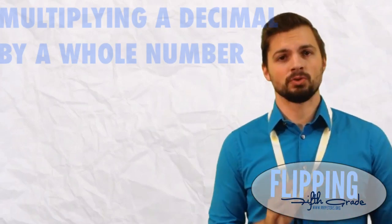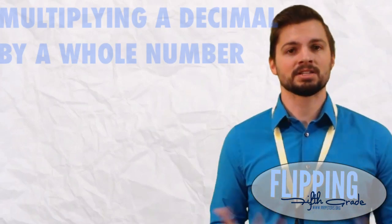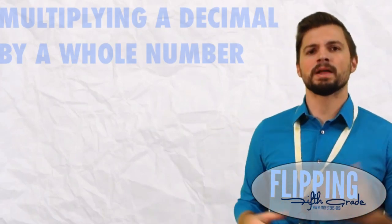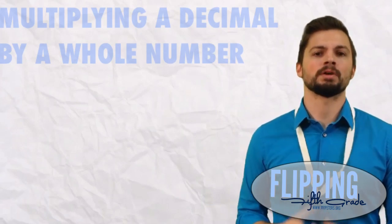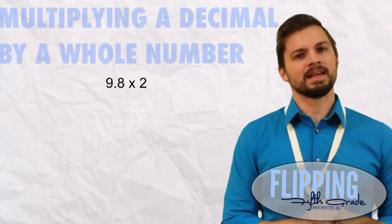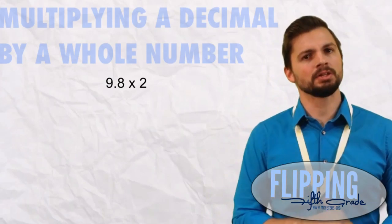Alright, now we are on to actual multiplication of decimals and we're going to start off where we multiply a decimal by a whole number. So I have this problem, 9.8 times 2. I'm going to show you a little trick here.